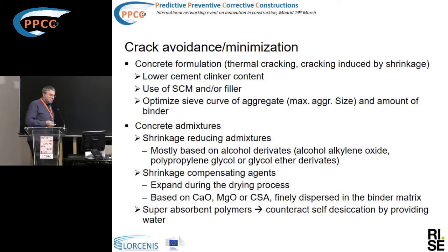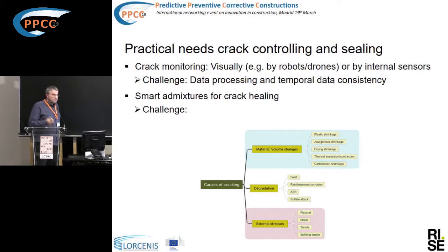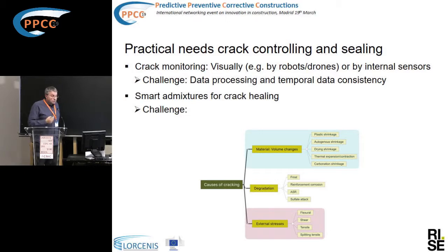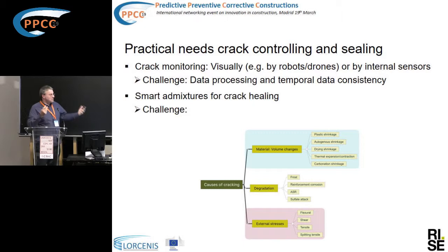For practical needs regarding crack monitoring, there are now different systems — by robots, drones, or internal sensors. But as discussed this morning, how do we process those data, and how do we ensure data can be read in 100 years? There is also the issue of data security: we don't want someone interfering with monitoring systems that may handle data from thousands of structures, just because a hacker takes pride in penetrating such a system.